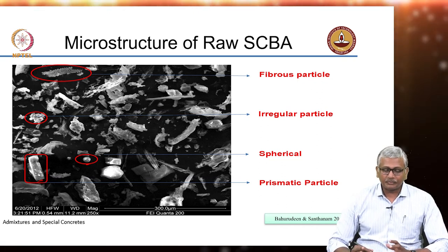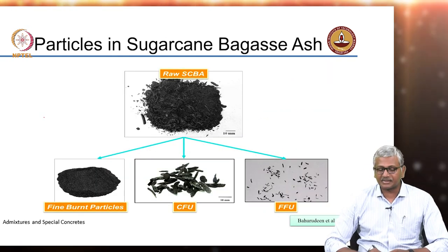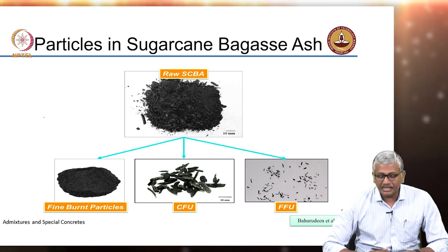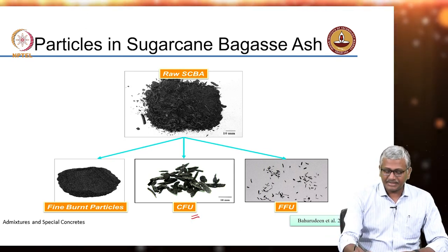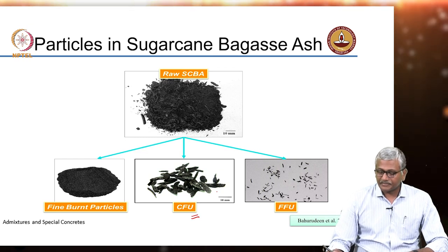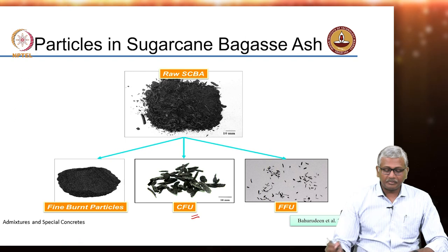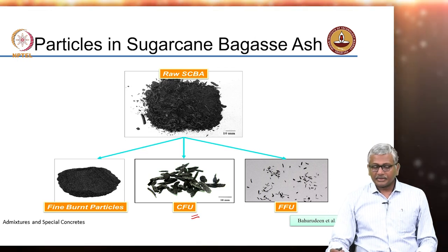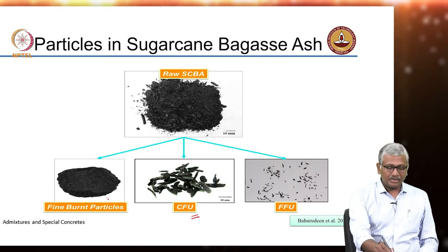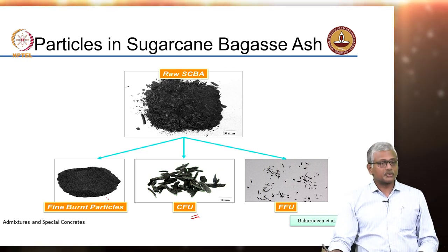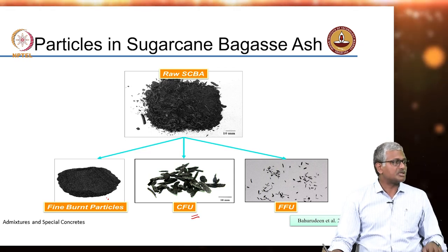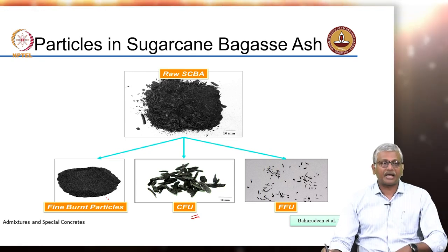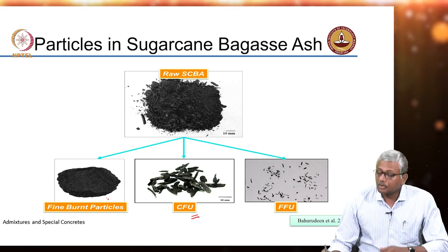The next step was to examine what the individual phases are. When raw sugarcane bagasse ash was sieved through various sizes after drying, it was found to contain coarse fibrous units, fine fibrous units, and fine burnt particles with no similarity in appearance to the fibrous materials. When the fine burnt particles were used, they were able to produce more than 75% activity index, indicating suitability for cement manufacture, whereas the fibrous materials had no pozzolanic activity at all.